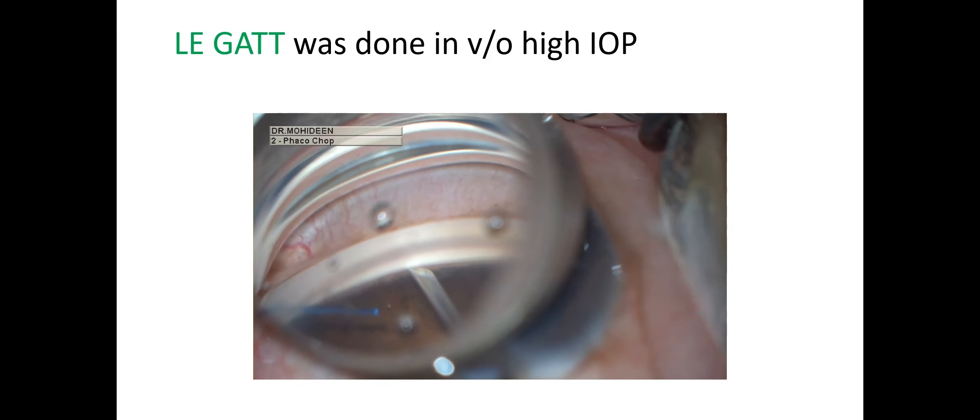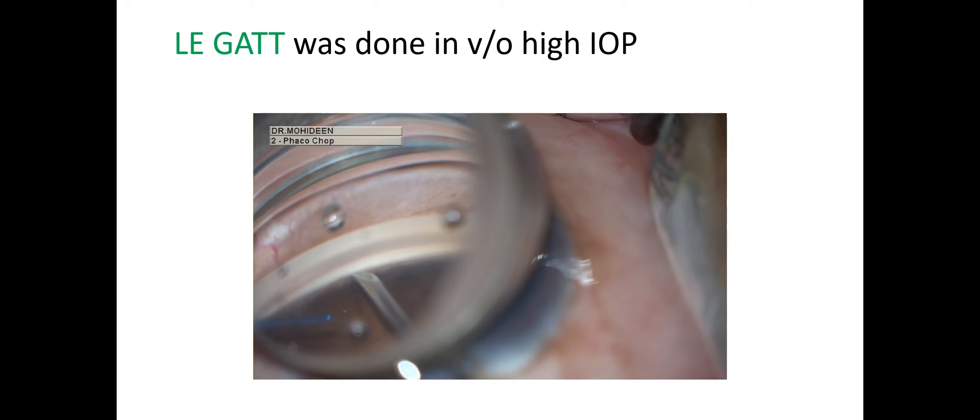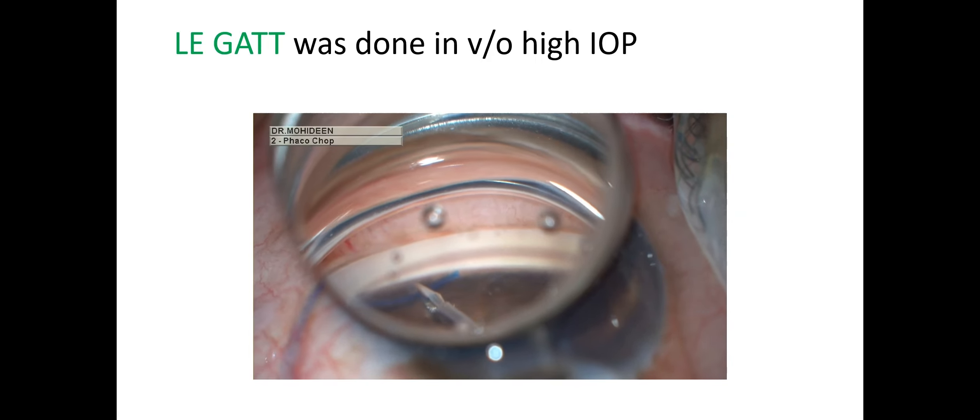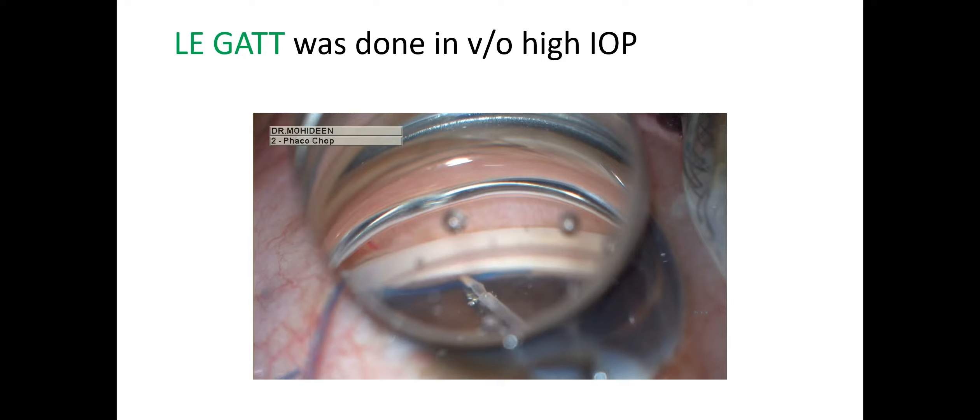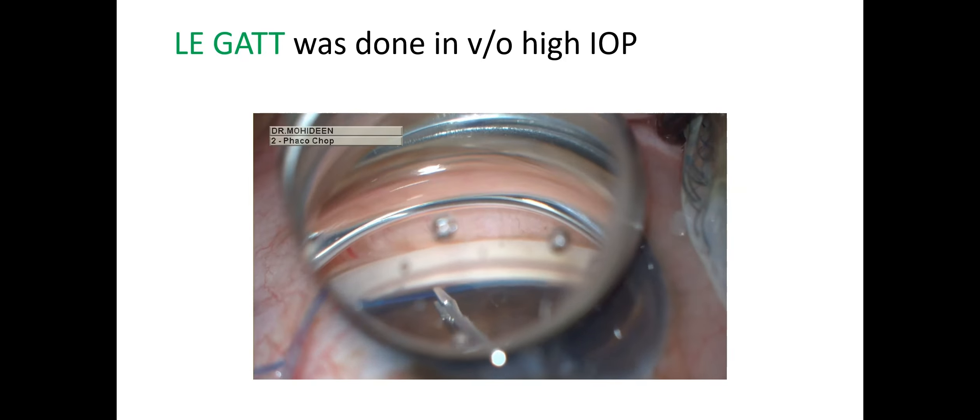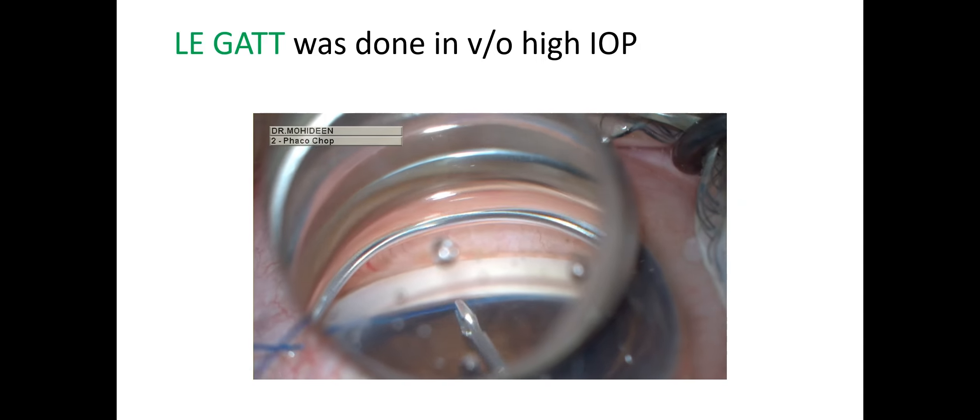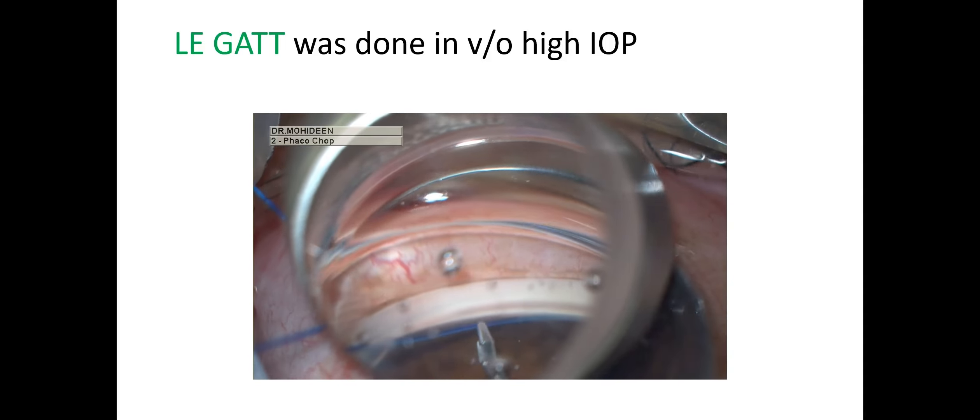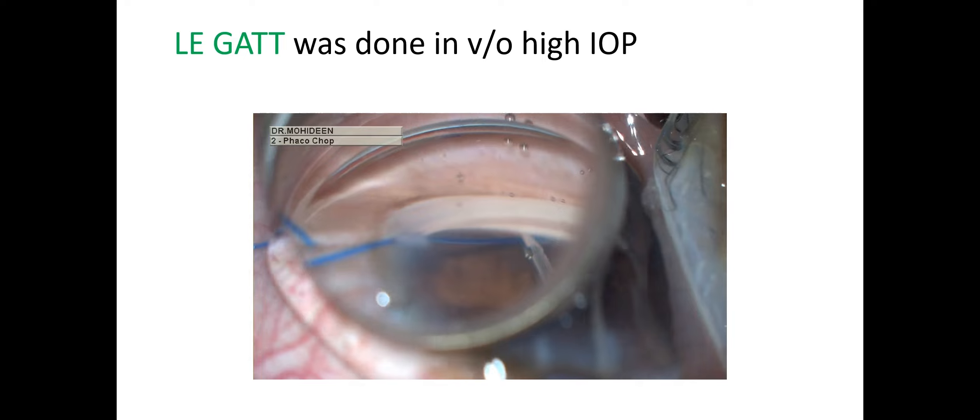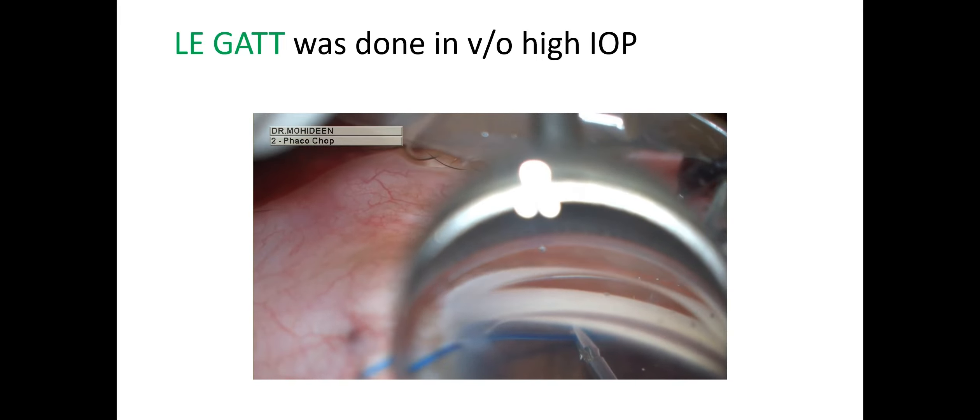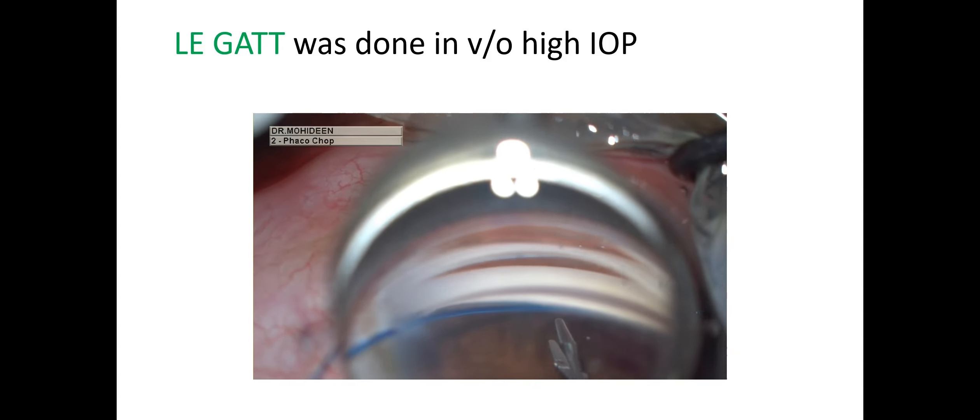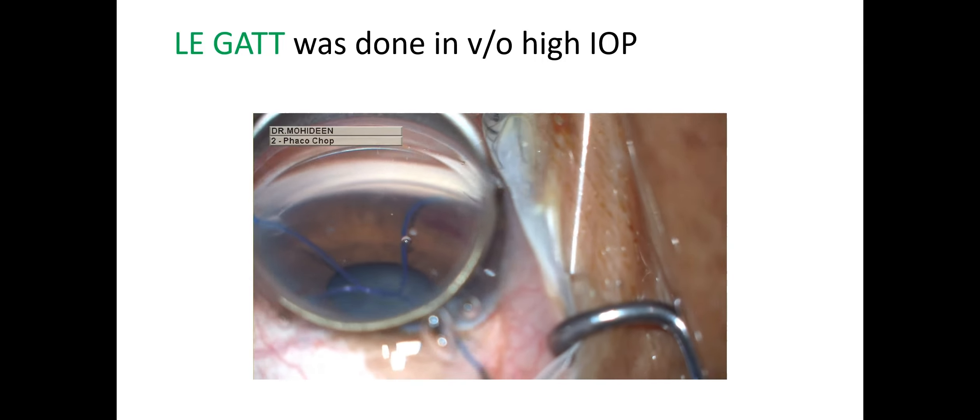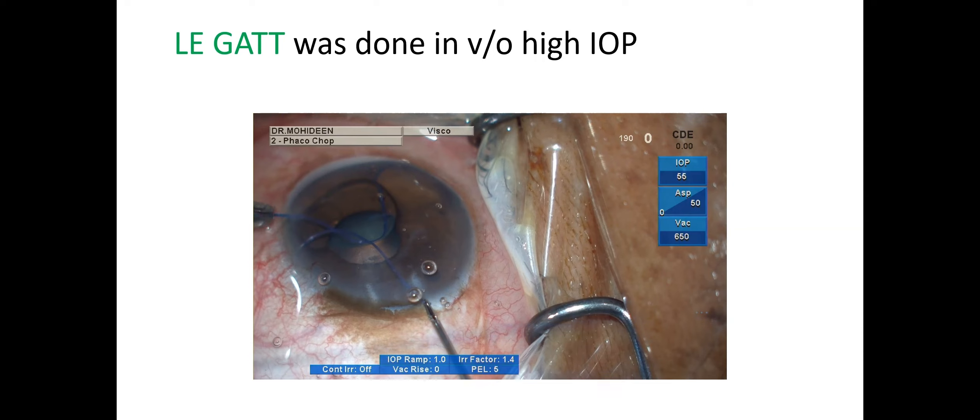After putting adequate viscoelastic and docking the goniolens, a goniotomy was made and Schlemm's canal was exposed. Then the blunted prolene tip is introduced into Schlemm's canal and threaded slowly along the canal 360 degrees. In small strokes, the prolene suture is pushed gently. When the tip appears on the other side, it is gently grabbed using Max-Grip forceps and the 360-degree GATT is completed.